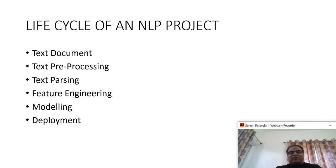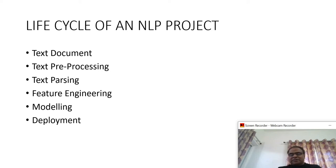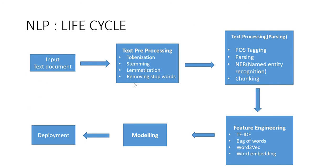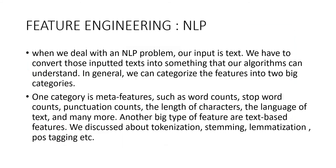This is the life cycle of an NLP project. A text document is the input, and the stages are text preprocessing, text parsing, feature engineering, modeling, and deployment. This is a pictorial representation of the NLP life cycle, and there is a separate video for it.